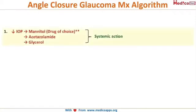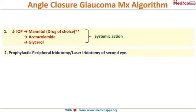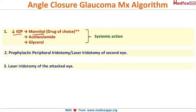To summarize the management of an acute episode of angle closure glaucoma: first, immediately reduce the intraocular pressure. The drug of choice is mannitol, followed by acetazolamide and glycerol. Then, do a prophylactic peripheral iridotomy in the opposite eye — not in the currently affected eye — to protect the second eye, which can also be predisposed to angle closure glaucoma. After 2 to 3 days, once the affected eye normalizes, perform a laser iridotomy in the affected eye as well. That is the algorithm for management of an acute episode of angle closure glaucoma.